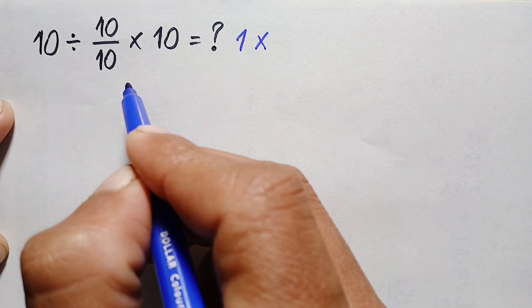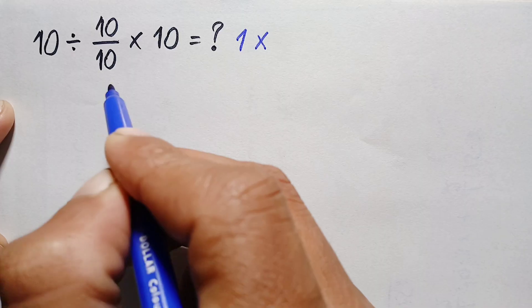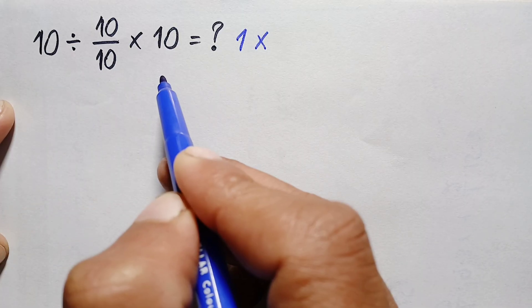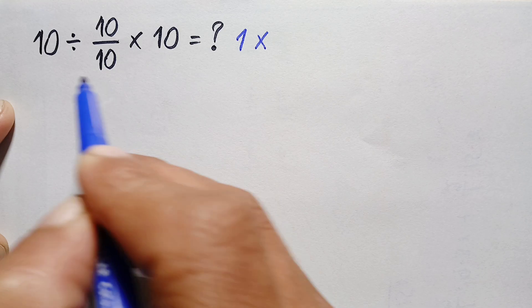To get the correct answer, we have to keep in mind the PEMDAS rule. According to the PEMDAS rule, we have to do division or multiplication from left to right, so according to the rule, first we have to do this division.